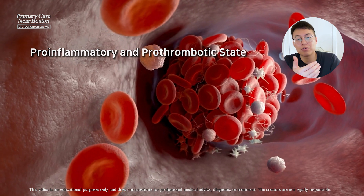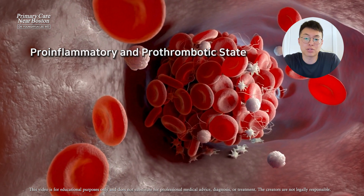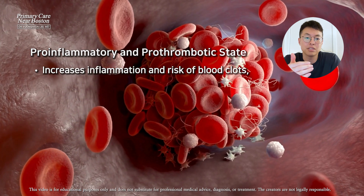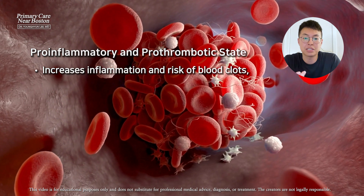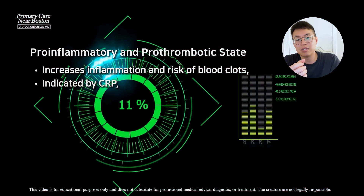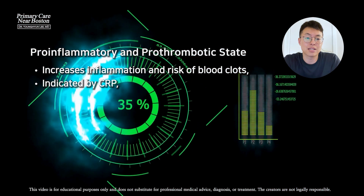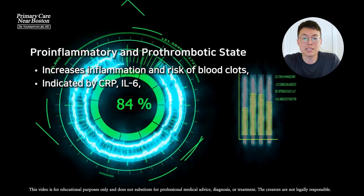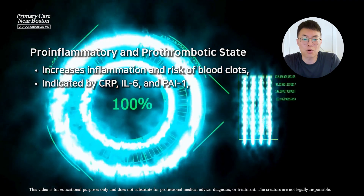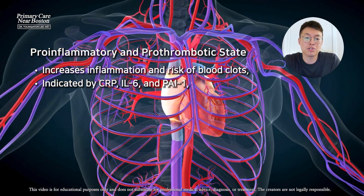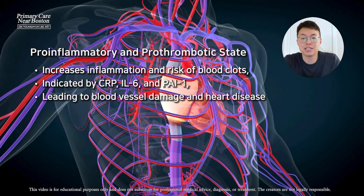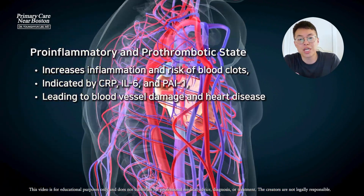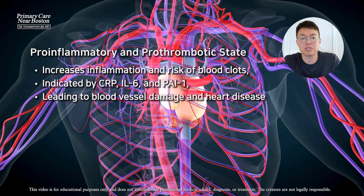Metabolic syndrome is recognized as a pro-inflammatory and pro-thrombotic state, meaning it causes inflammation and increases the risk of blood clots. This state is associated with elevated levels of C-reactive protein, interleukin-6, and plasminogen activator inhibitor-1. These markers indicate that the body is in a constant state of low-grade inflammation, which can damage blood vessels and lead to heart disease.